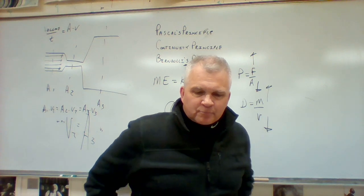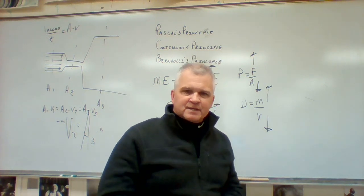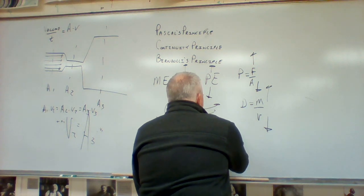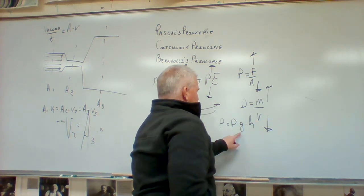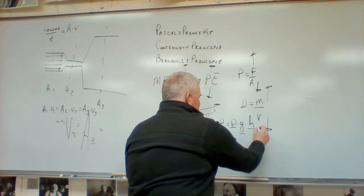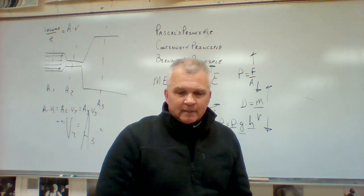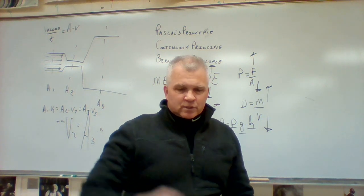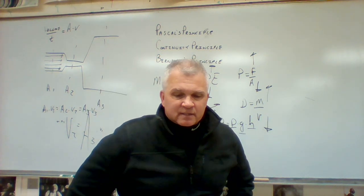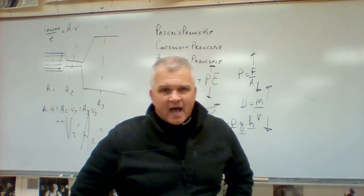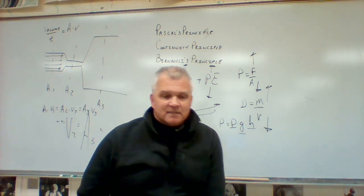The two factors that affect pressure in a fluid are the fluid's density and the depth in the fluid. So pressure equals density times G times H — density of the fluid times depth in the fluid. Question ten: according to the continuity principle, as the area of a container decreases, the velocity increases. Smaller area means faster velocity.